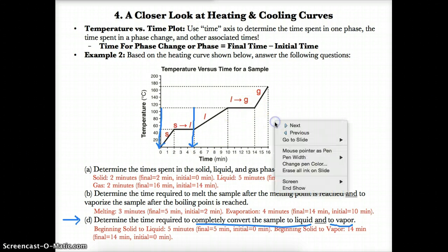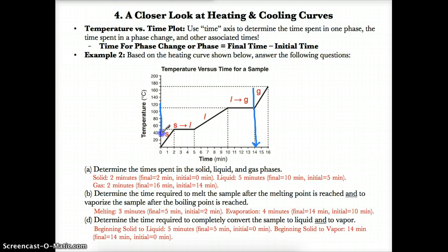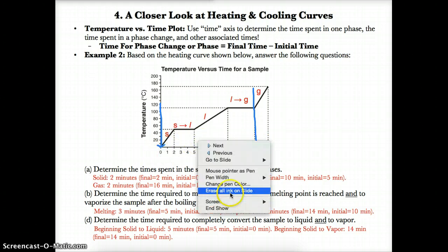To get the time required to completely convert a sample to vapor, you just have to get to the end of vaporization, since vaporization converts something to vapor, and the starting time will be zero. So you do 14 minus zero, giving you 14 minutes.